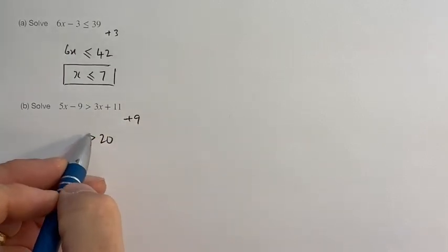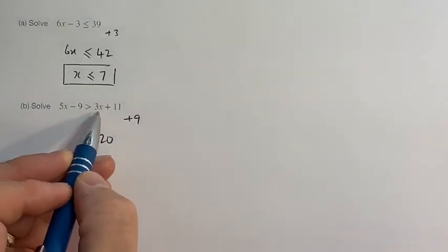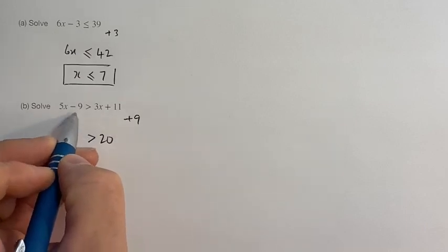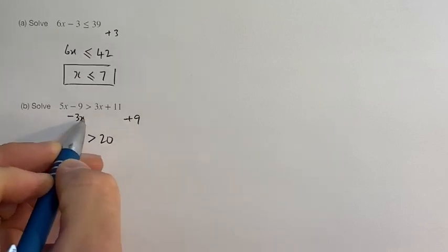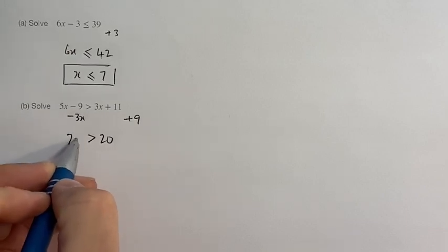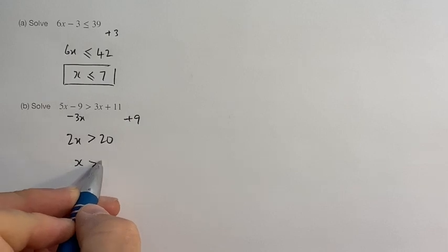Keep the greater than symbol in place, but we put the 3x on the other side because you can't have letter x's on both sides. Take the 3x from the 5x makes 2x. Divide both sides by 2, so x is greater than 10.